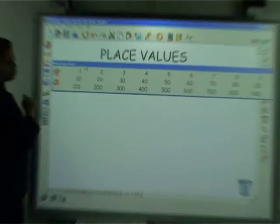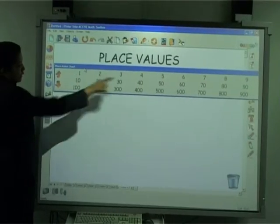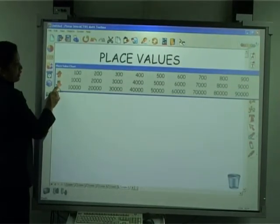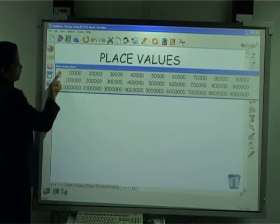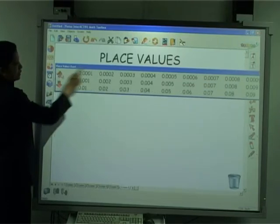Now, this place value chart has 1 until 900. Not only that, it has more, and it also has the decimal points.